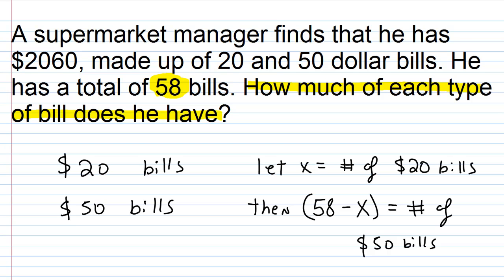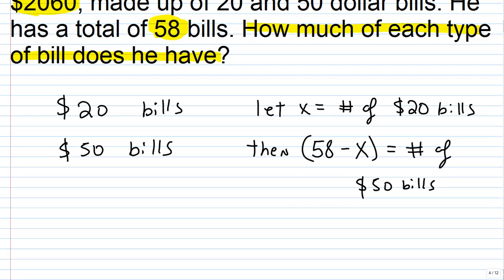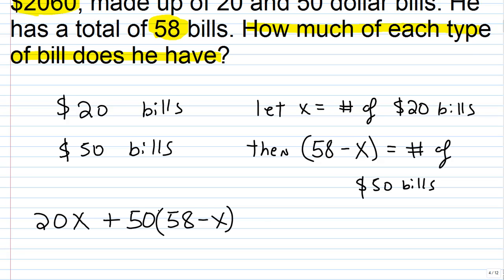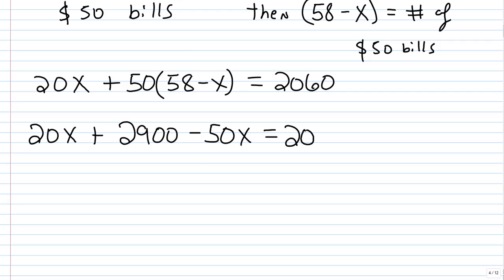Now we set up an equation. The total value of all bills is $2,060. So: 20 times X, the value of all $20 bills, plus 50 times (58 minus X), the value of all $50 bills, equals 2,060. Expanding: 20X plus 2,900 minus 50X equals 2,060.